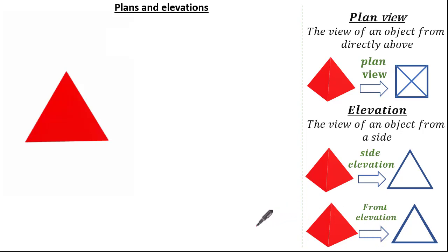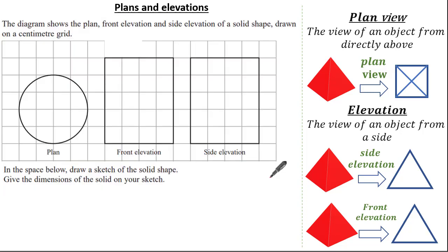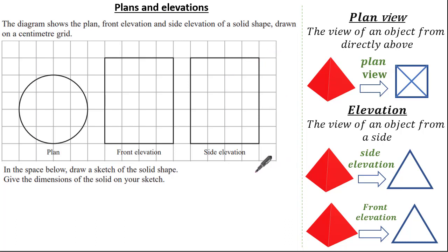Now let's have a look at some past exam questions. The question states that the diagram shows the plan view, the front elevation, and the side elevation of a solid shape drawn on a centimeter square grid. In the space below we're asked to sketch the solid shape and give its dimensions. See if you can give it a go and press pause if you need.